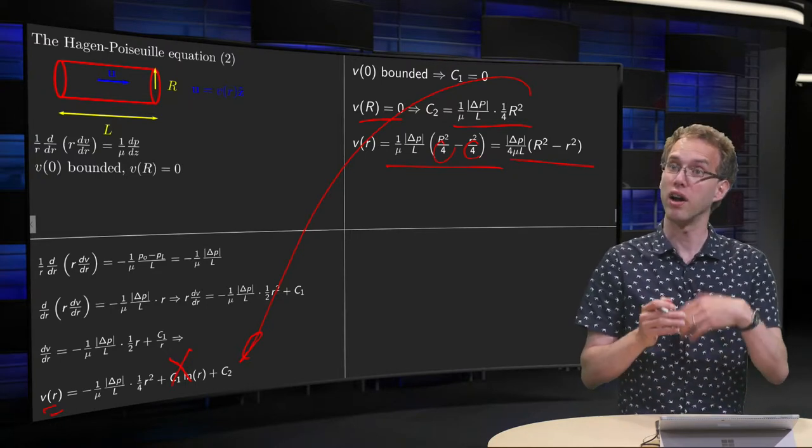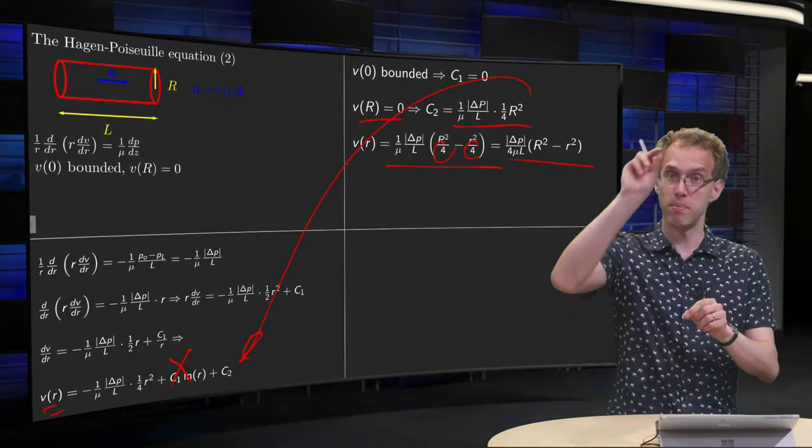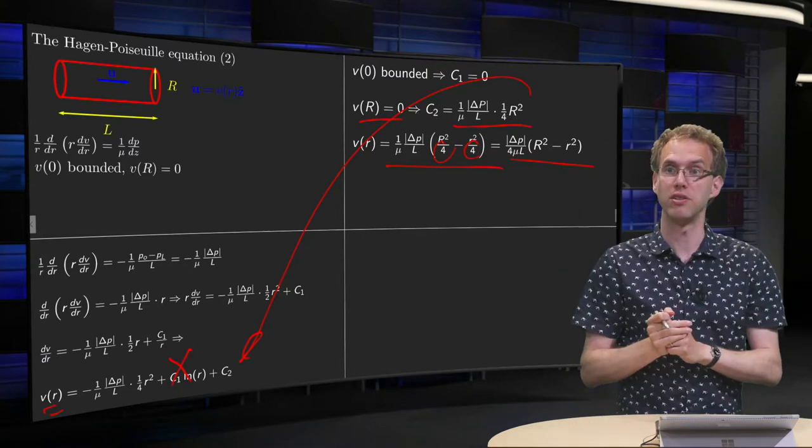So V as a function of r is quadratic in r, so we get some quadratic velocity profile. Maximum velocity in the center, and then going to 0 at the two boundaries.